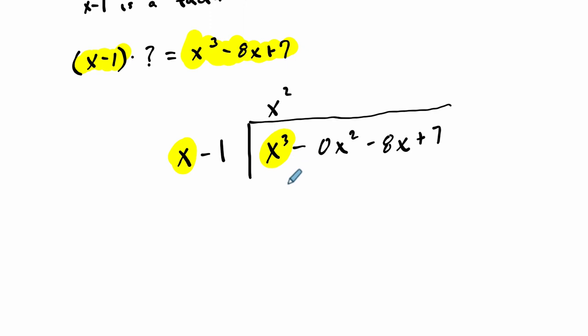So we want to test that out. X squared times X minus 1 is X cubed minus X squared times negative 1 is minus X squared. Then we subtract to see have we reached our polynomial, or is there a remainder? X cubed minus itself is 0. Negative 0 is almost just 0. Minus negative X squared is plus X squared. Negative 8X minus nothing is negative 8X. And then 7 minus nothing is 7.